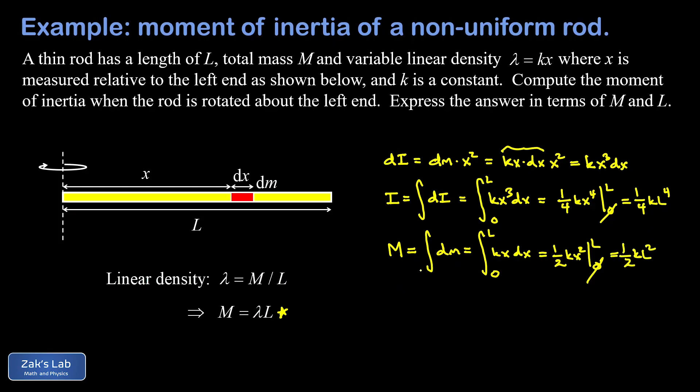Now we solve for k, so we can sub that out in our expression for the moment of inertia. So we find that k is 2M over L squared. Now we can replace that in our expression for moment of inertia.